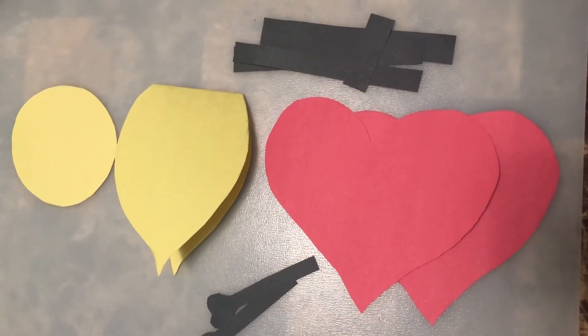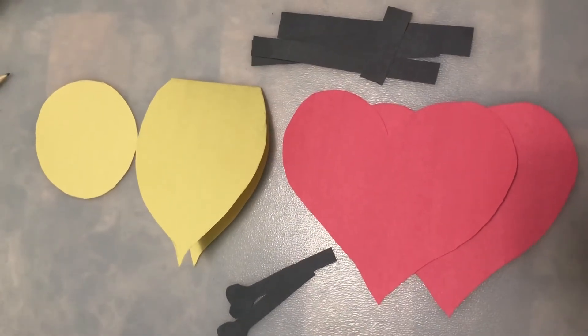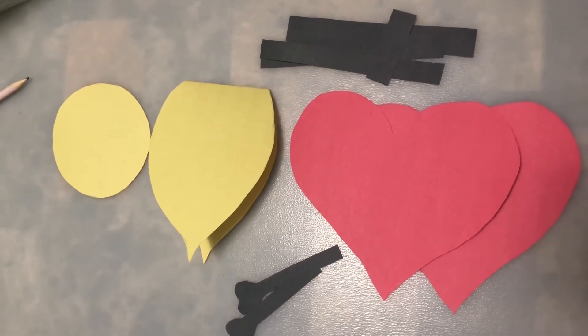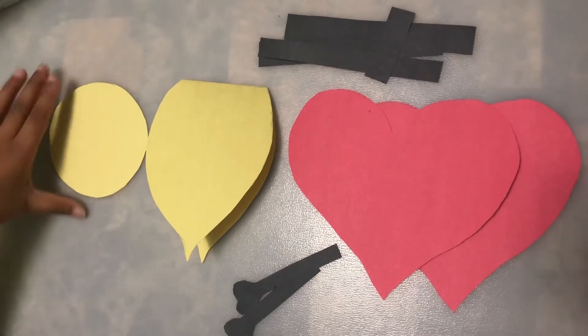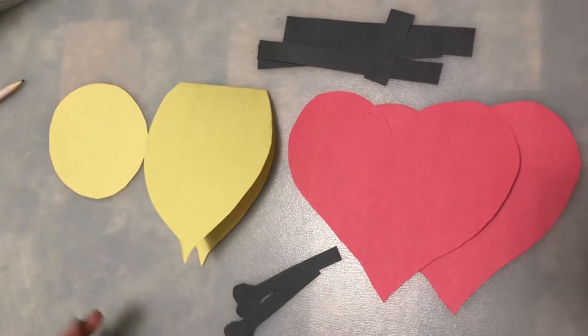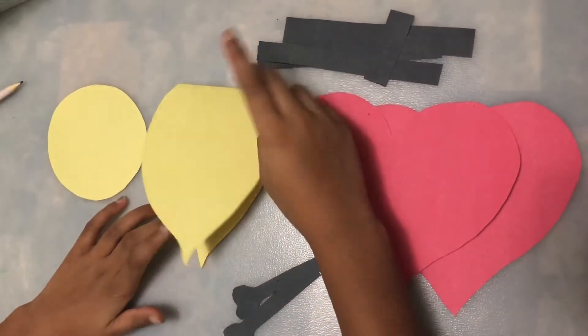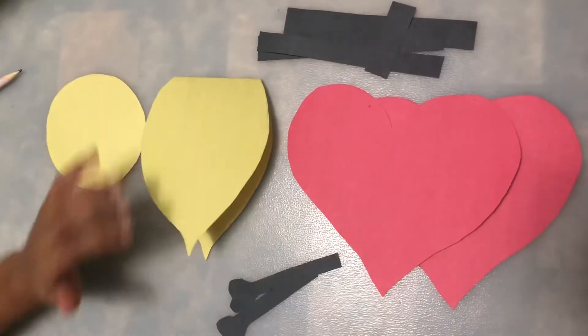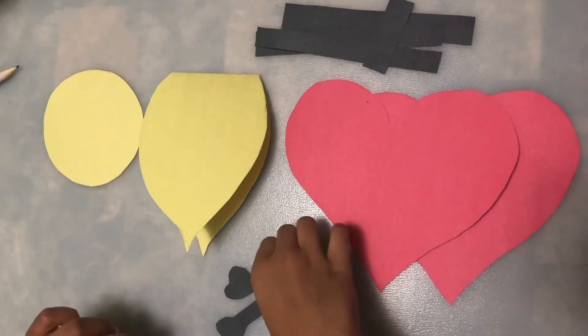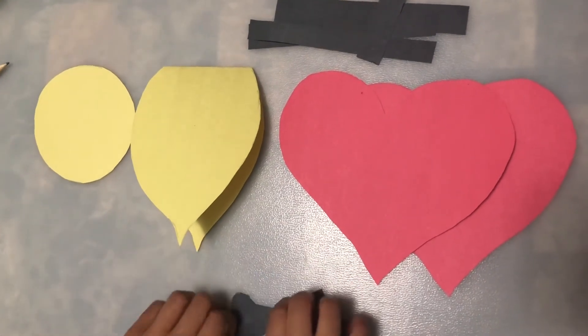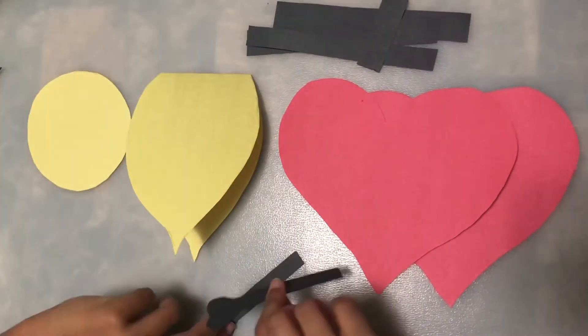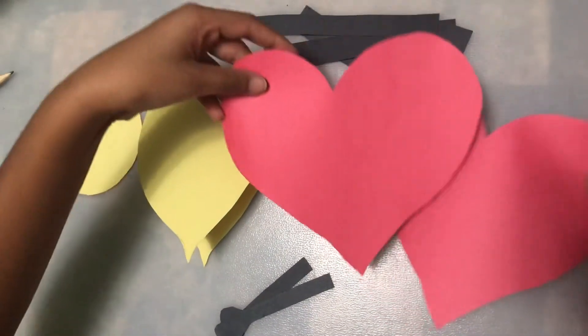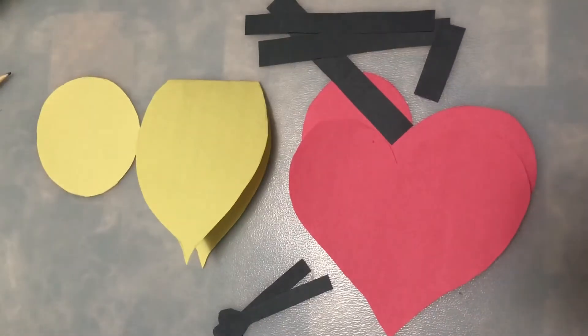Now I cut out all the pieces. And now it's time to make our whole bee. So I'm gonna tell you what we have. We have a circle for its head and the body that actually opens up like a fold so we can write whatever we want in the middle. Then we got two antennas, all of our strips, and our two big hearts. And now we're gonna make our bee.